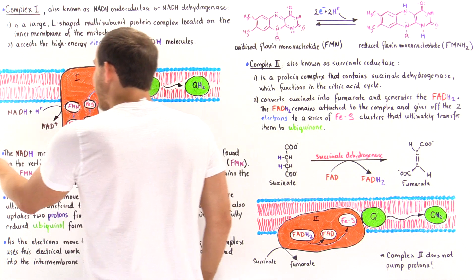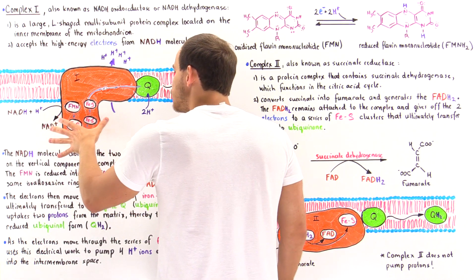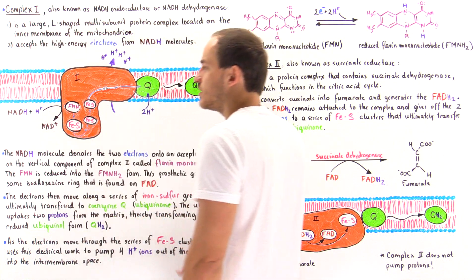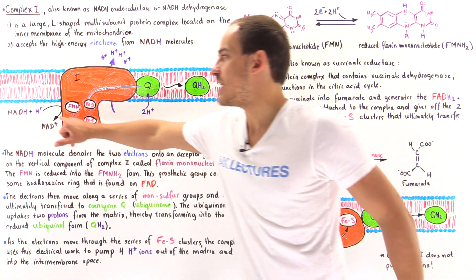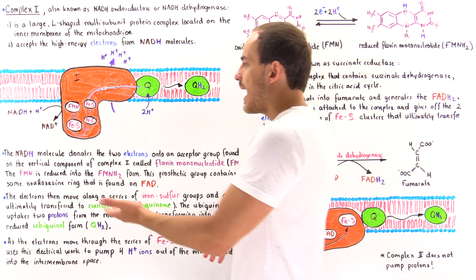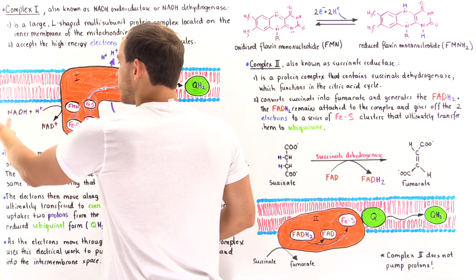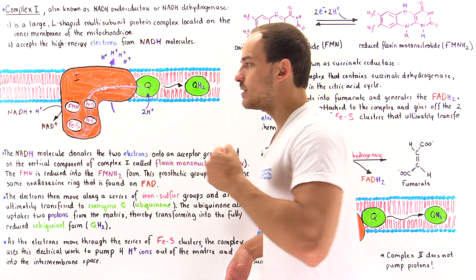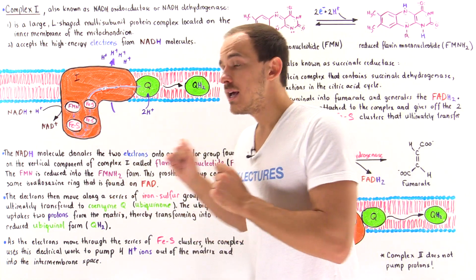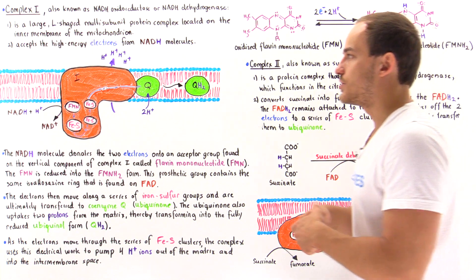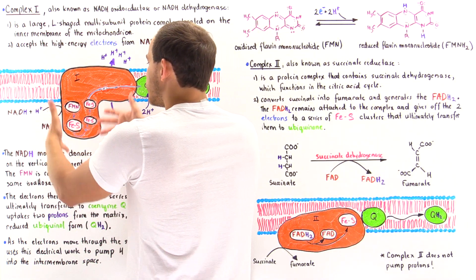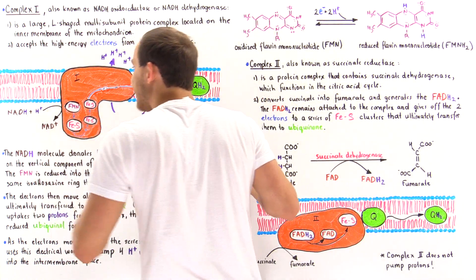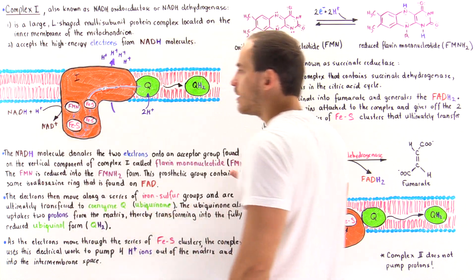The L-shaped structure has a horizontal component that lies in the inner membrane and a vertical component that extends into the matrix. NADH actually binds onto this extension in the matrix, along with an H+ ion. In the process, we oxidize the NADH back into NAD+, and those two electrons are extracted by a group known as FMN — flavin mononucleotide.